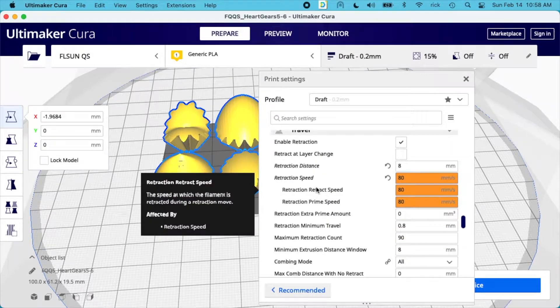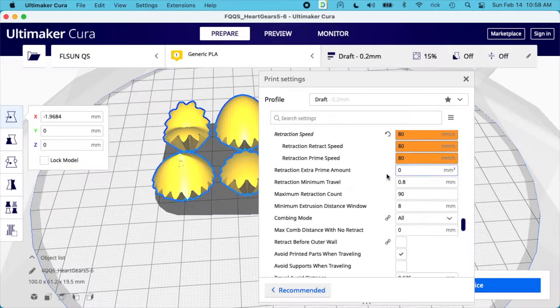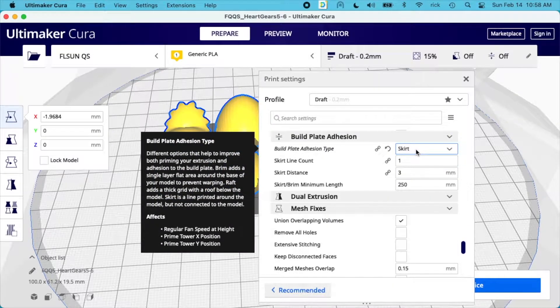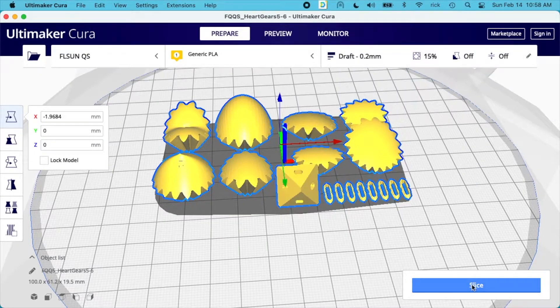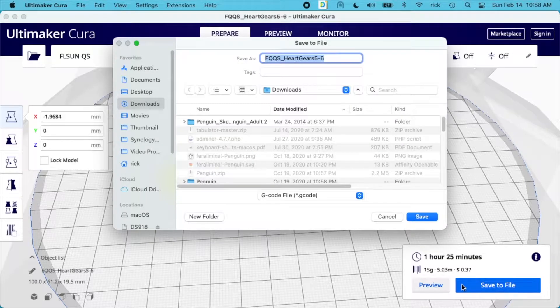I have retraction speed and distance changed here. I have the distance at 8 millimeters and the speed at 80 millimeters per second. I have build plate adhesion set to skirt and that just draws a line around the print. I'll slice it up. Our print time is one hour 25 minutes and our cost is 37 cents. I'll save this to a file and I'm using a blue PLA.